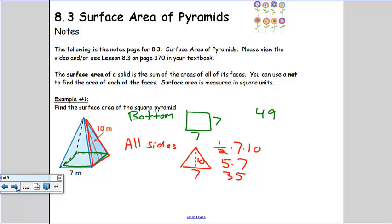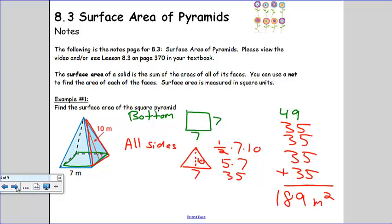But we don't just have one side, we have all sides. There are four of them. So taking our forty-nine for the base, I'm going to add my left side, which is thirty-five, right side, which is thirty-five, front thirty-five, and back thirty-five. Adding all them up, I will be getting a hundred and eighty-nine meters squared. That's what we have for our first one here.